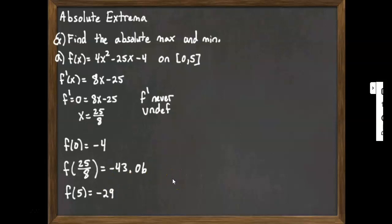Whichever one's biggest is the maximum. Whichever one's smallest is the minimum. And as we see here, the biggest value is actually negative 4, so that's our maximum. And the smallest value is negative 43, that's our minimum.